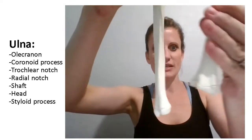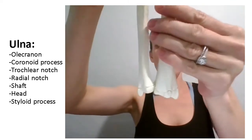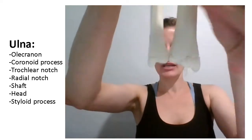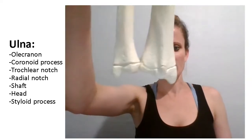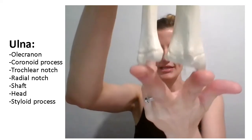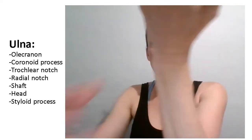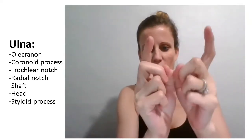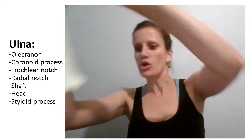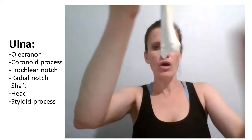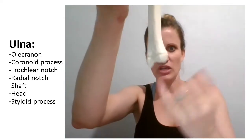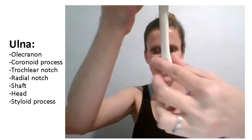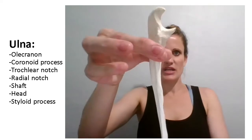We saw a styloid process also on the bottom of the radius. So if you sit like this and look at the bottom of the radius and the bottom of the ulna, they both have a styloid process sticking down — the little bulges you feel on either side of your wrist. They kind of go down around the carpal bones. So there's a styloid process of the radius, but also a styloid process of the ulna. The styloid process is the pointy part; the round part is the head; the long thin part is the shaft.